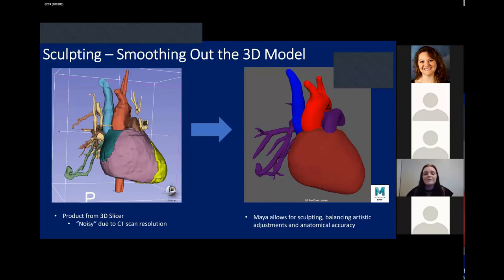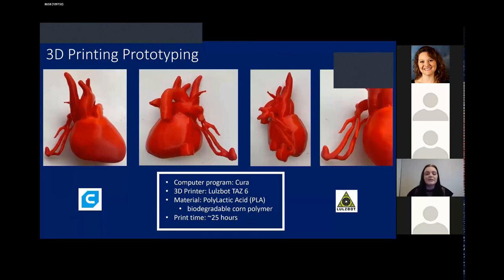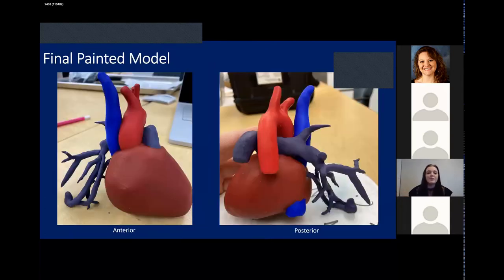As we were working in Maya, we made multiple changes to the model, and printed a couple of prototypes to assess these changes. We used the Lulzbot TAZ-6 printer with PLA, a type of plastic, as the material. While this was great for prototyping, the material wasn't as strong as what we were looking for in a clinical setting. So we printed our final model using the Form 2 printer, which uses a resin material. This provided a much stronger, more durable model that can also be painted, so we chose this for our final model.